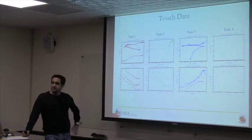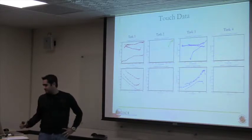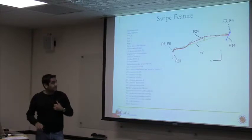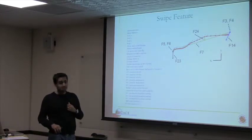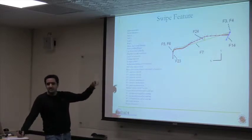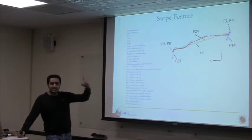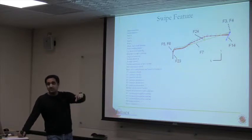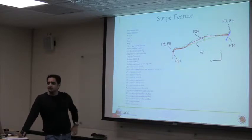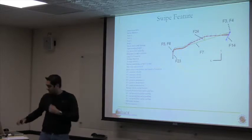Given a swipe, how do we come up with a feature to feed into a classifier to continuously authenticate a user? We come up with a 29-dimensional feature vector based on a swipe. Essentially, we look at the start location, end location, velocity, acceleration, amount of pressure applied, area covered by the finger, orientation, and so on. Each swipe gives us this 29-dimensional feature vector, and we do that for each and every swipe, then fit it into a classifier.